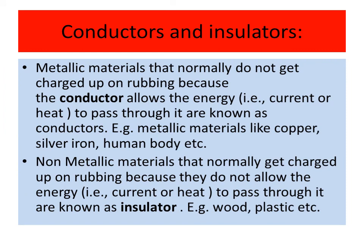Next is conductors and insulators. Conductors are those materials which allow electricity to pass through them, but they normally do not get charged up on rubbing. Because the conductors allow the energy to pass through them, they are known as conductors. For example, metallic materials like copper, silver, iron, human body, etc.